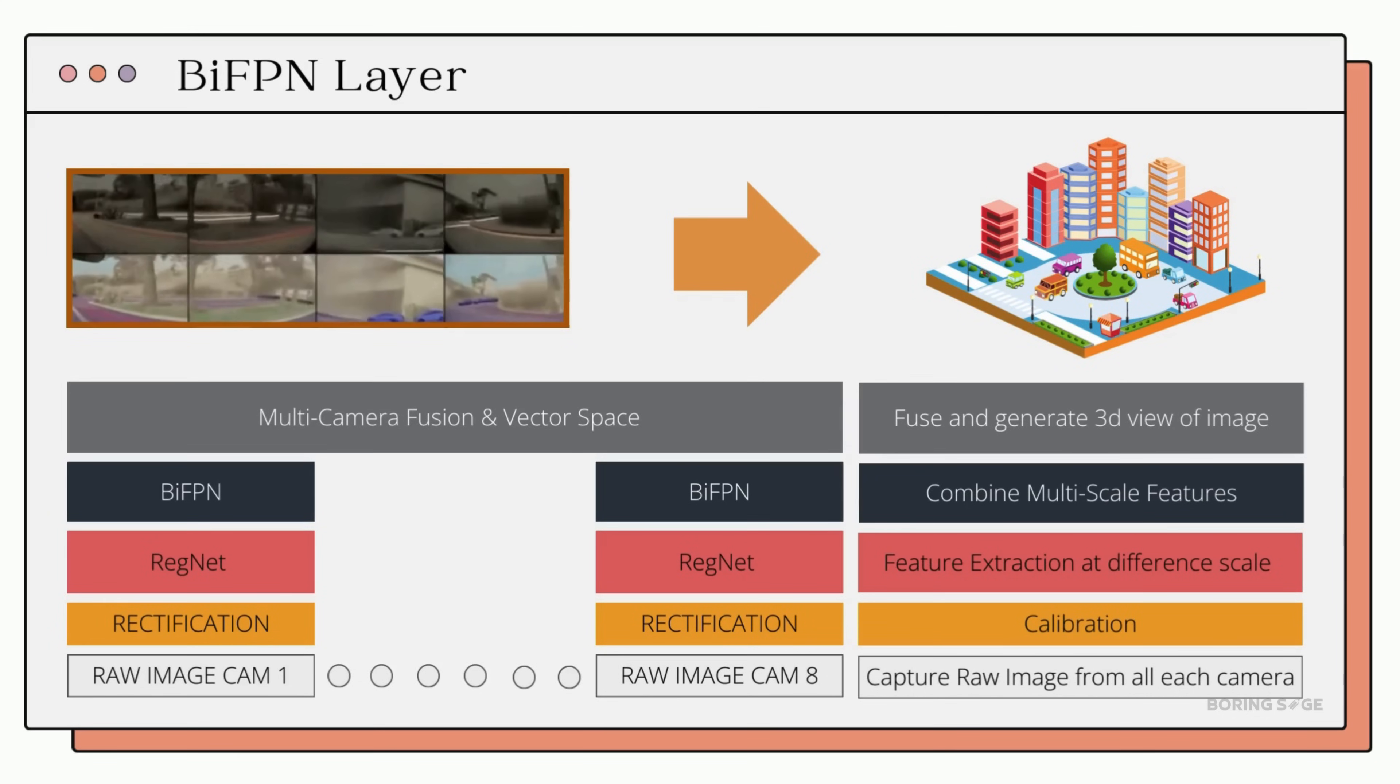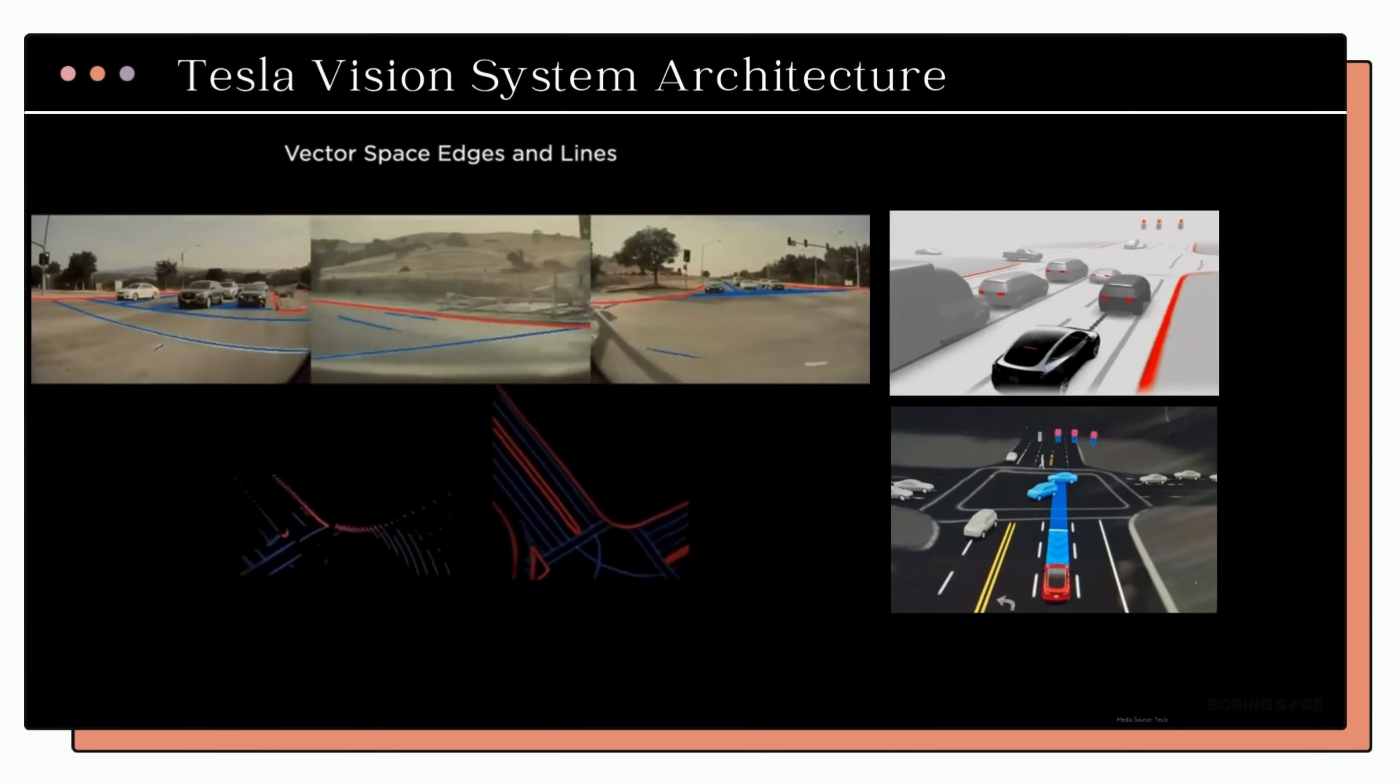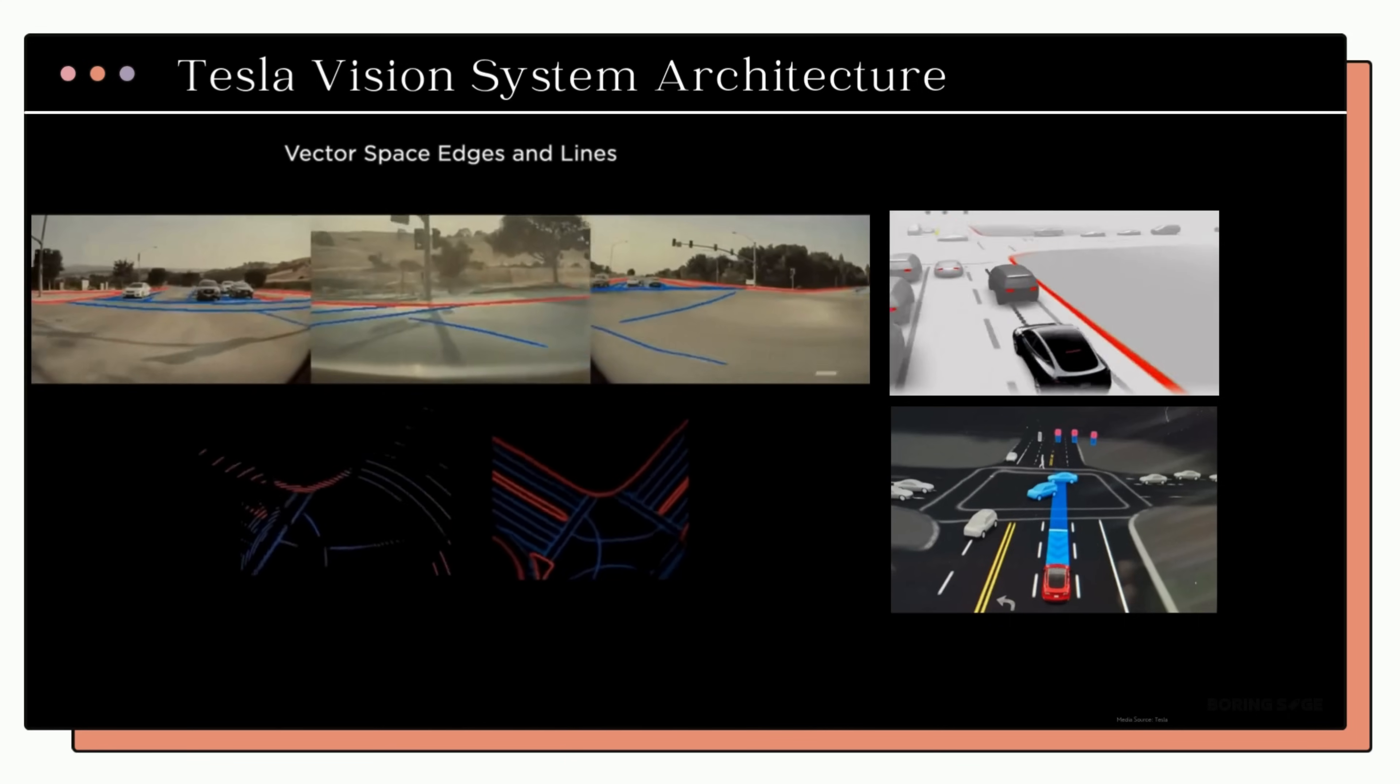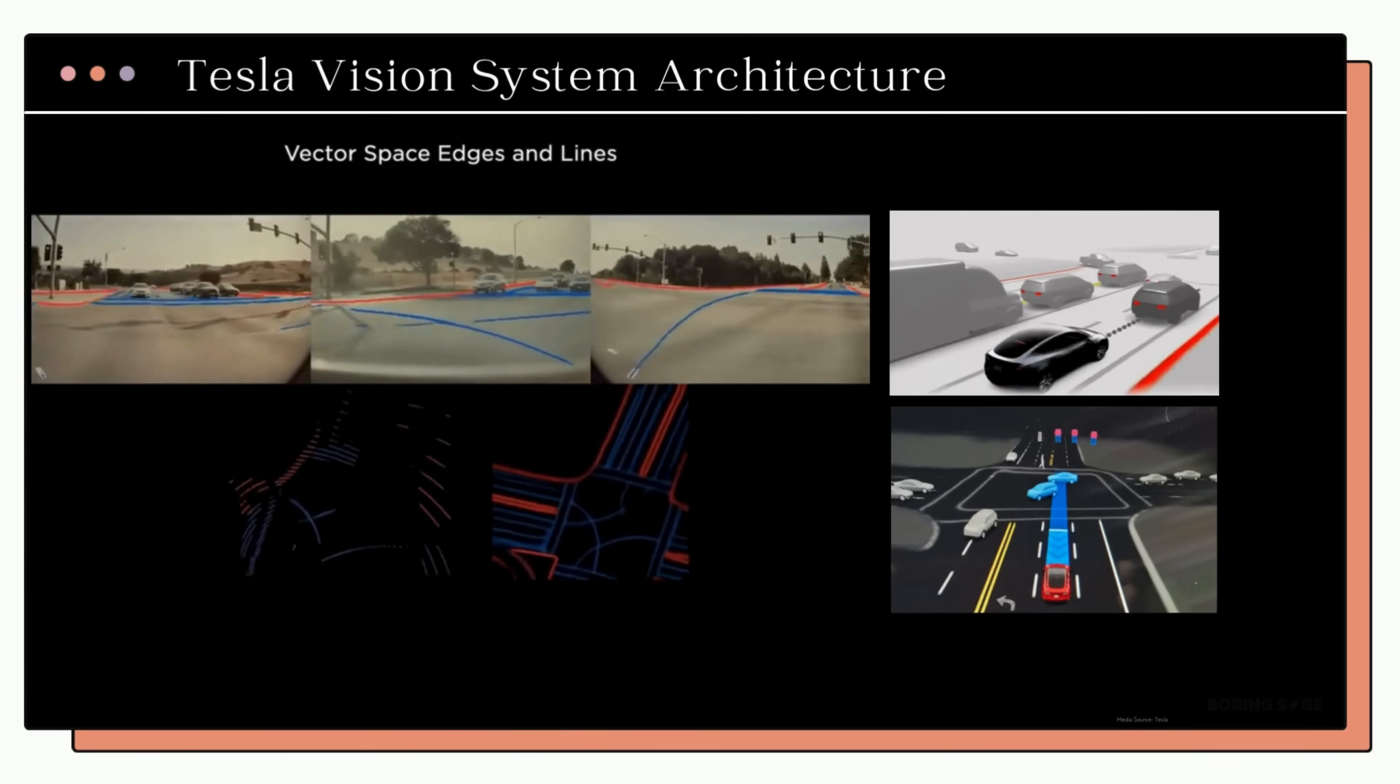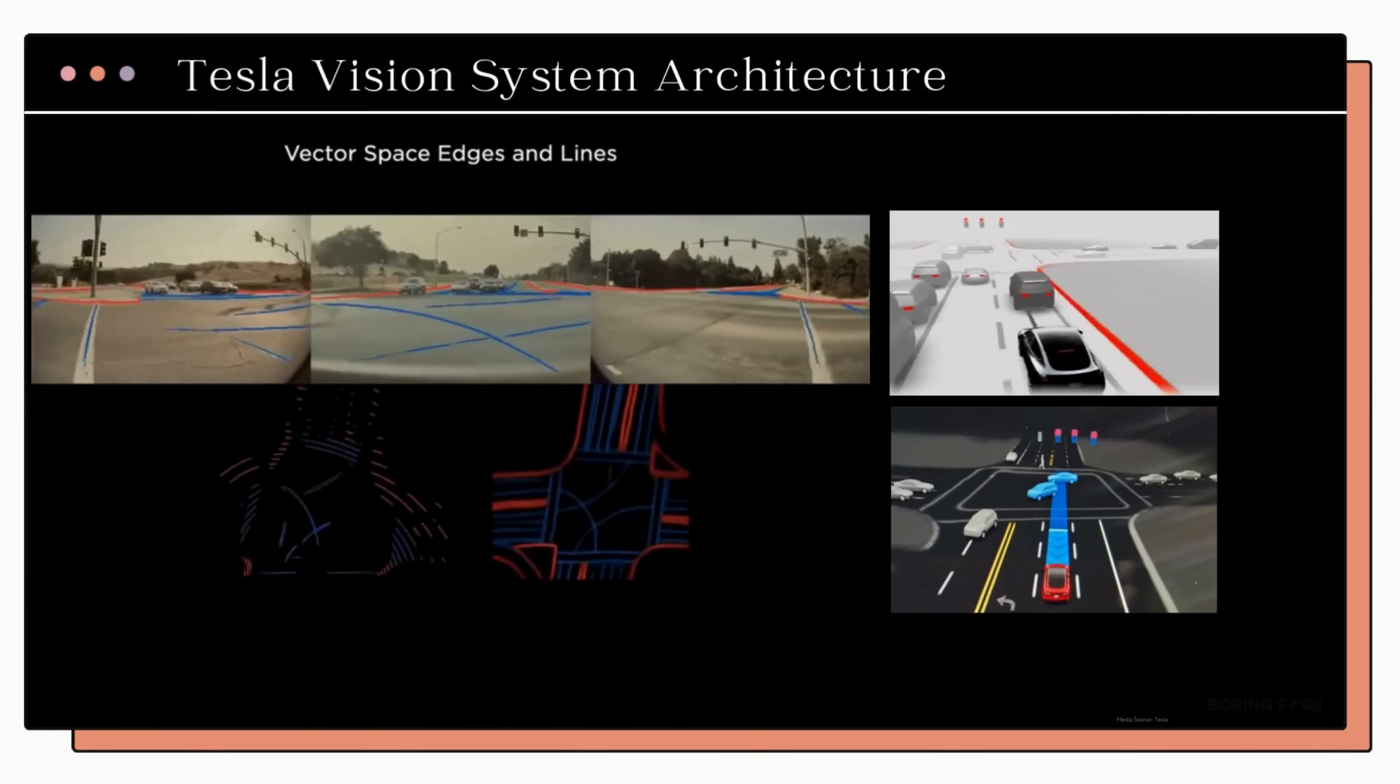Once all the features have been extracted, they are sent to the Fusion layer. This is where the magic happens. The Fusion layer merges the output from all eight cameras into a single unified 3D model. Here is a quick snapshot of what this looks like. This model is essentially a 3D model which provides a real-time representation of the car's surroundings and is developed by fusing all the data from the camera feeds through the layers that we saw till now.